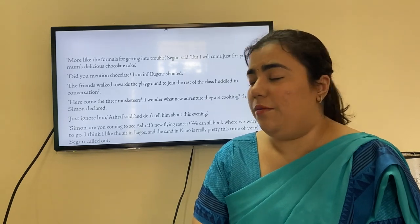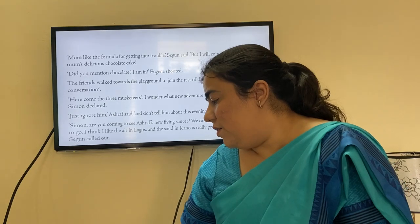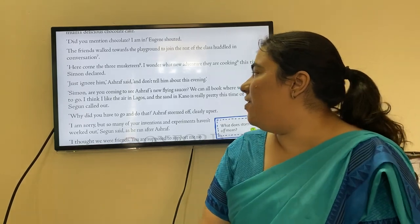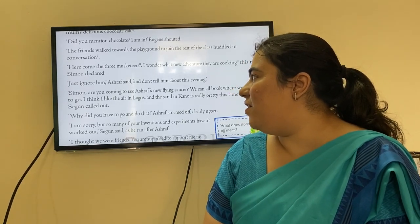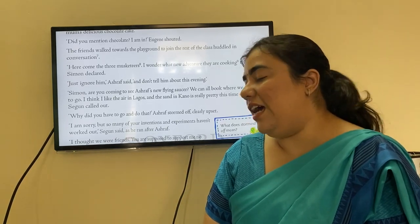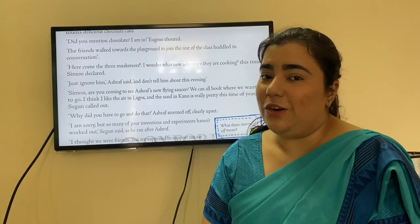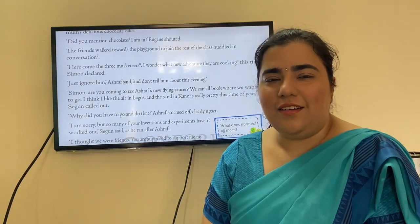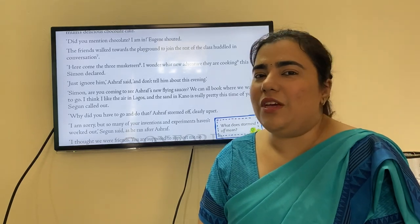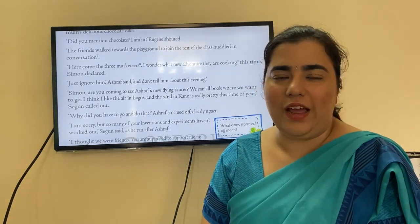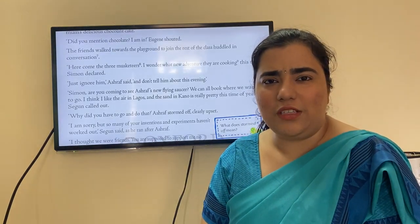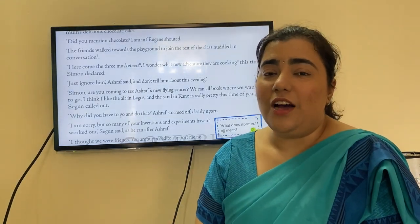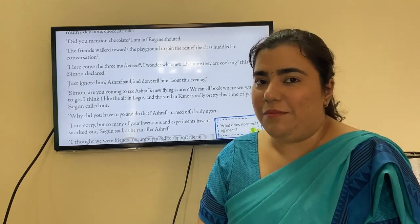Ashraf told Eugene and Segan to ignore Simon and not reveal their evening plans. But then Segan called out, 'Simon, are you coming to see Ashraf's new flying saucer? We can all book — where do you want to go? The air in Lagos is nice, and the sand in Kano is pretty this time of year.' Segan is still pulling Ashraf's leg, joking that they can fly anywhere on Ashraf's claimed airplane.